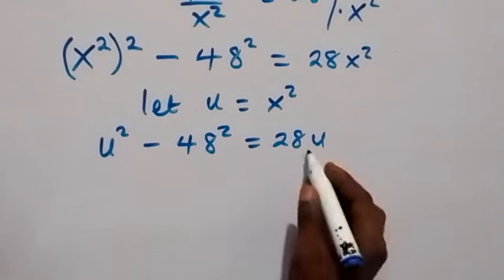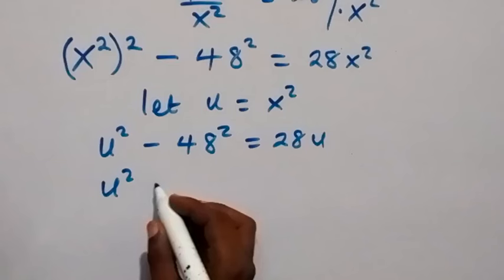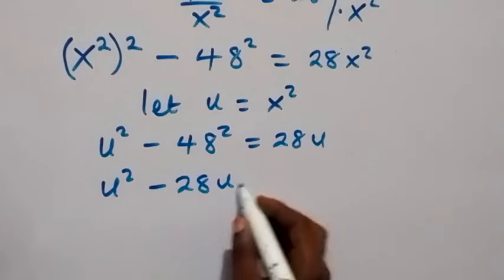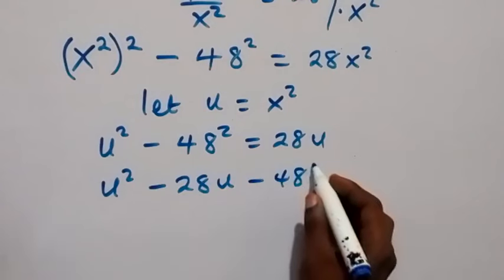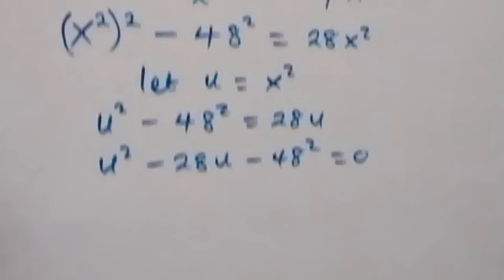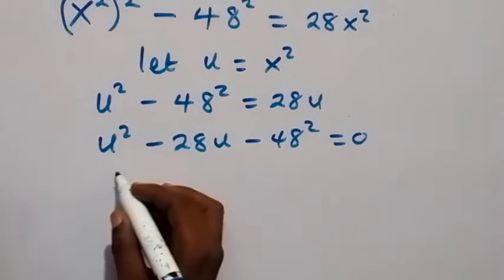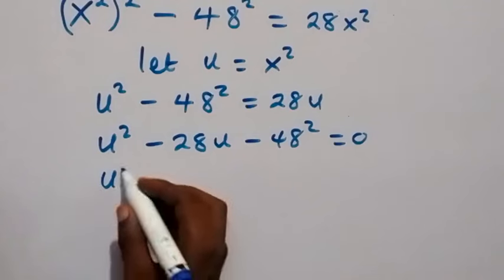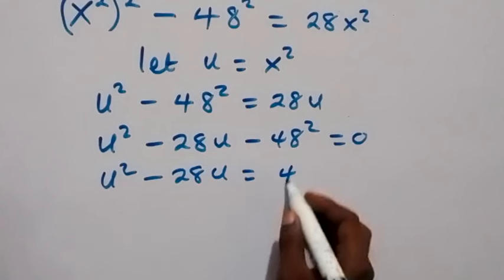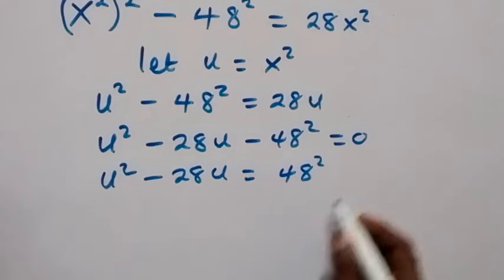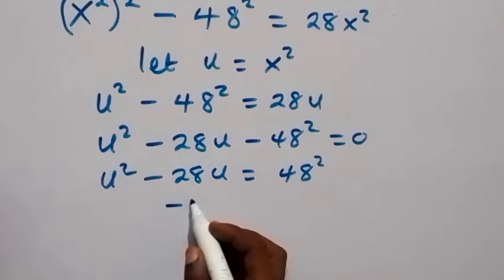Rearranging by bringing 28u to the left side, we have u squared minus 28u minus 48 squared equals zero. This is a quadratic equation in u. We will solve it using completing the square, so we have u squared minus 28u equals 48 squared. The coefficient of u is minus 28.